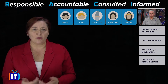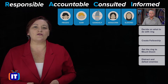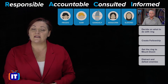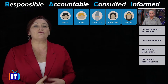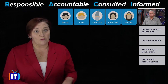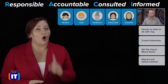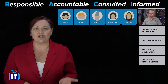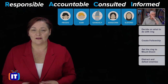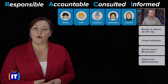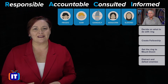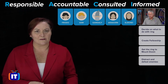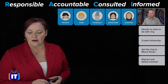Accountable means the buck stops here — it's the person who ensures that something happens, not necessarily the same person that actually does the work. That's the responsible person. There can be more than one responsible person, but only ever one accountable person. Consulted is somebody whose opinion we ask, and informed is somebody who is told about that particular activity. Let's jump straight in.